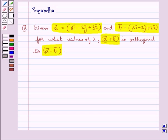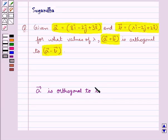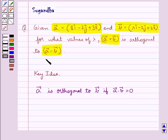Before we move on to the solution, let's recall the condition when two vectors are orthogonal to each other. Given vector A and vector B, vector A is said to be orthogonal to vector B if vector A dot vector B is equal to 0. This is the key idea to be used in this question.